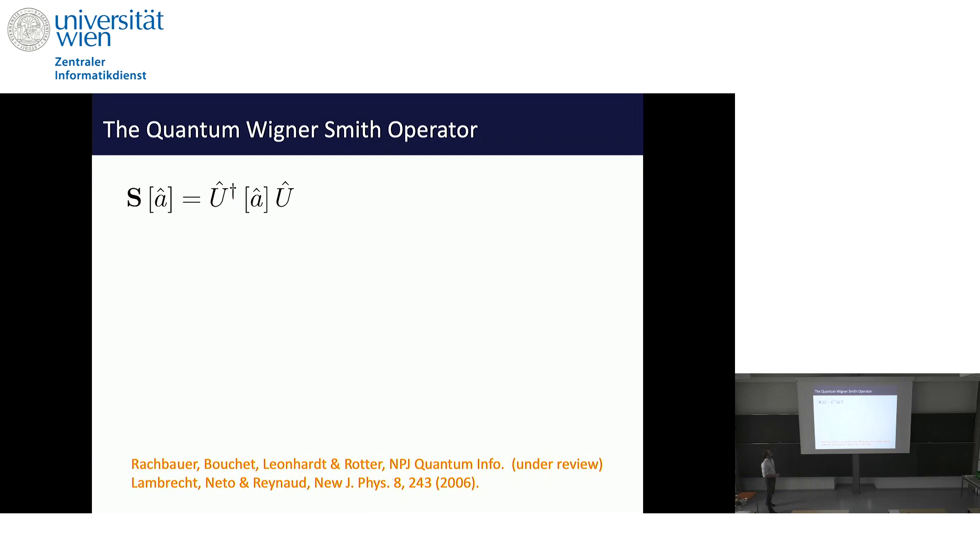In the same way as the scattering matrix, due to scattering, transfers an incoming field to an outgoing field, in quantum mechanics you can define an evolution operator. This evolution operator should satisfy the following relation that was actually derived by Ulf some years ago. If you start with this relation, you can also define a Wigner-Smith operator that doesn't just contain information about classical scattering, but actually about the full quantum scattering problem. The only difference is that you don't have the scattering matrix here, but you have this evolution operator that is uniquely determined by the scattering matrix, by the classical scattering matrix that you can measure.